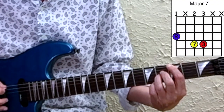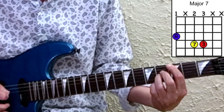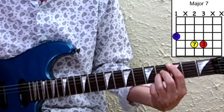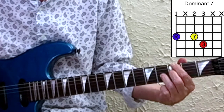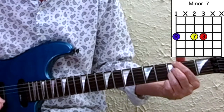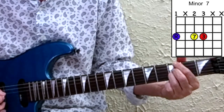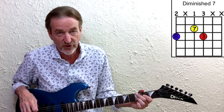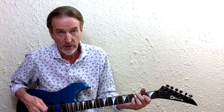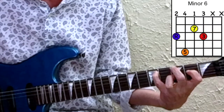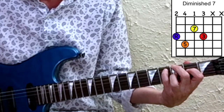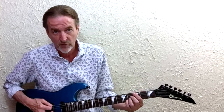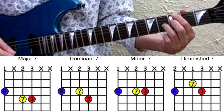You're muting the fifth string, playing the root on the sixth string, the seven and the third — that's a major seven. If you flat the seven, that gives you a dominant seven — that would be G7 in this case. If you flat the third, that's G minor seven. And if you flat the seven again, that's a G diminished seven, which could also be a G minor six. The difference is the fifth: minor six has a natural five, diminished seven has a flatted five. Since we're omitting the fifth, they're the same thing — we'll call it a diminished seven since we're in the context of seventh chords. Those are your four shapes from a sixth-string root: major, dominant, minor, and diminished.